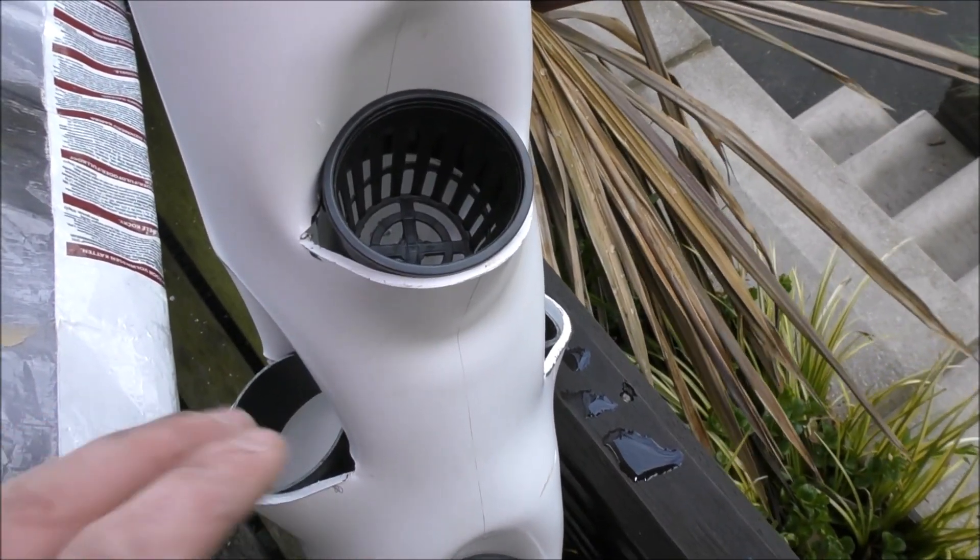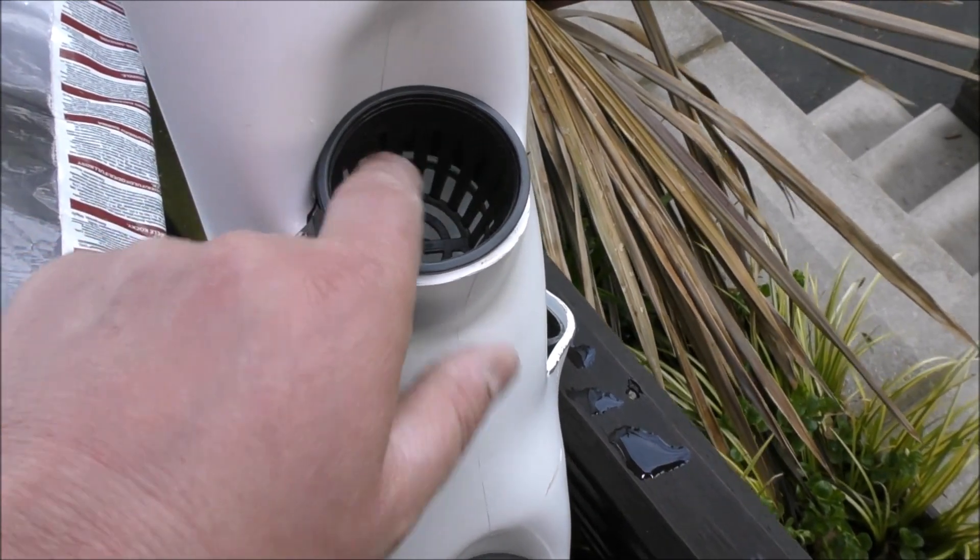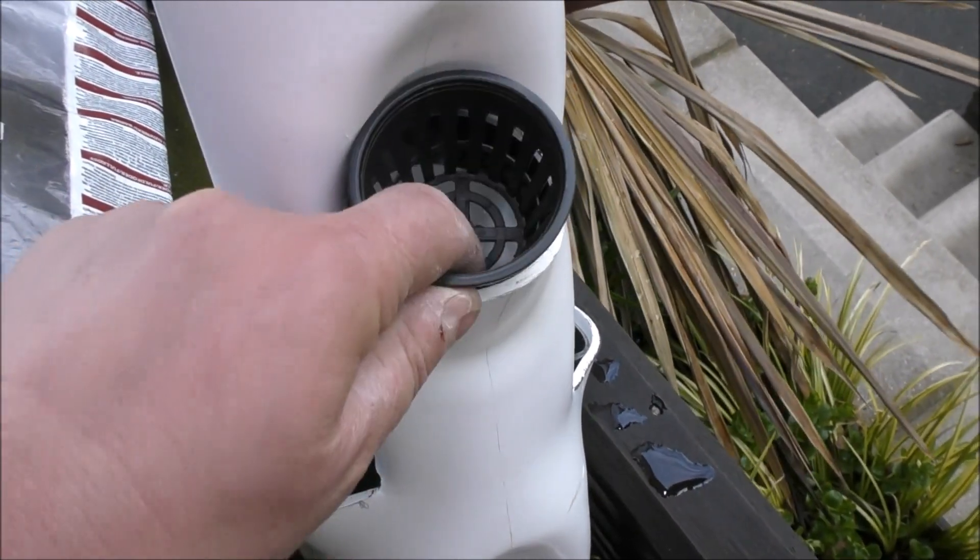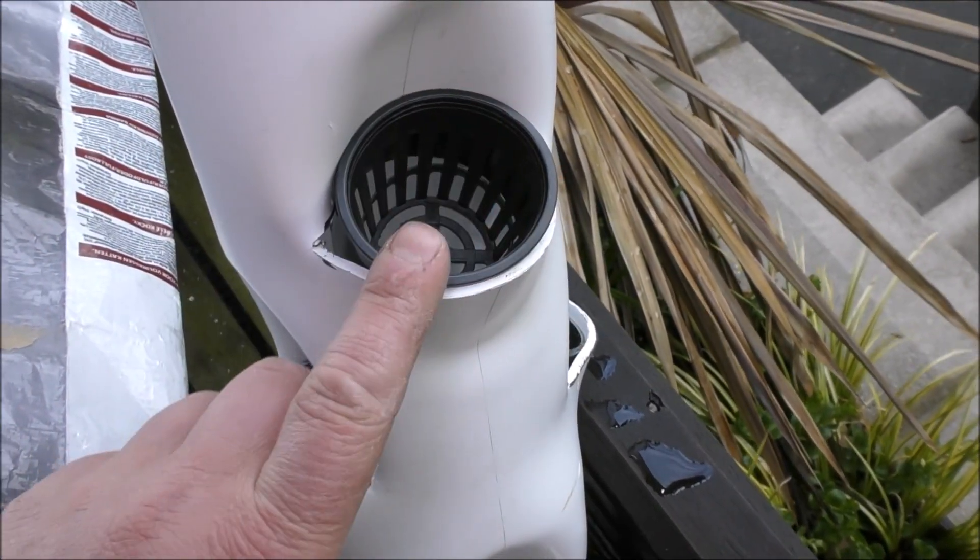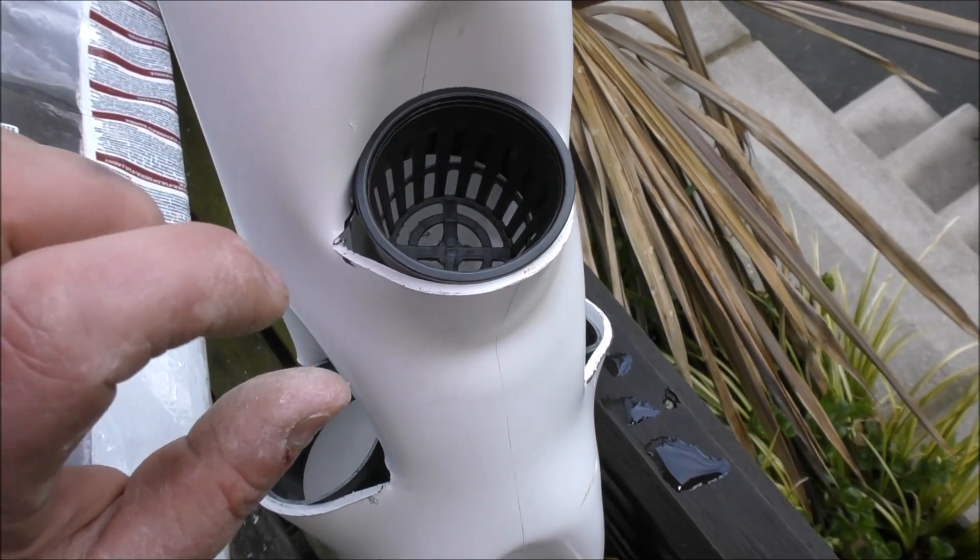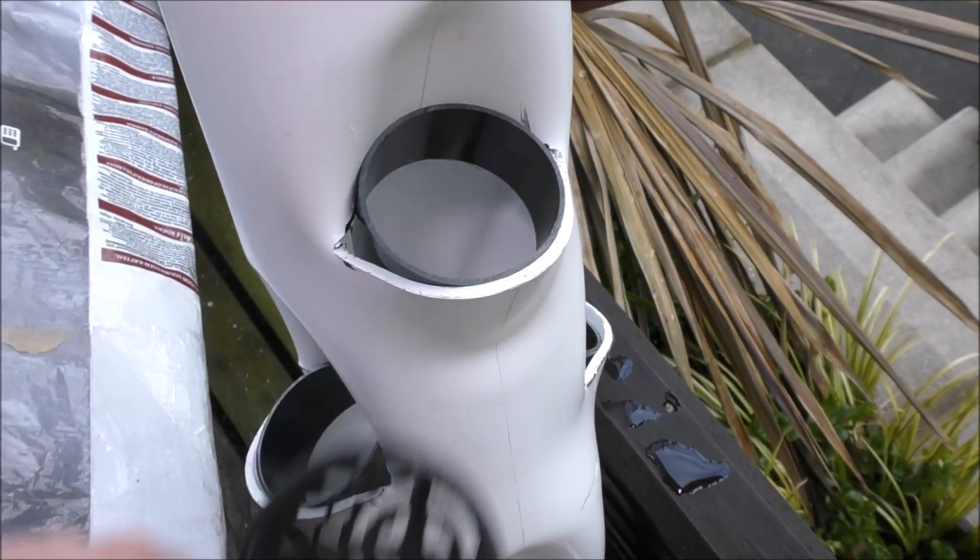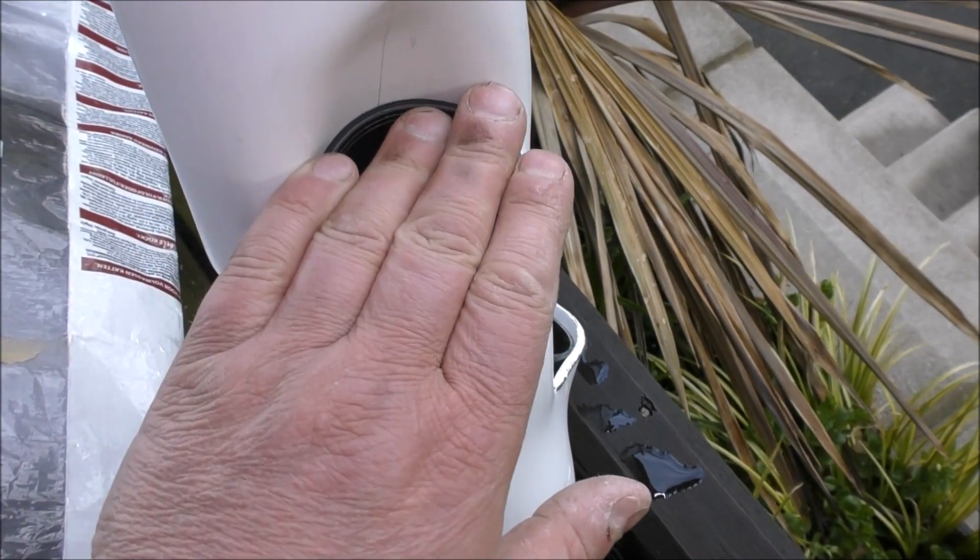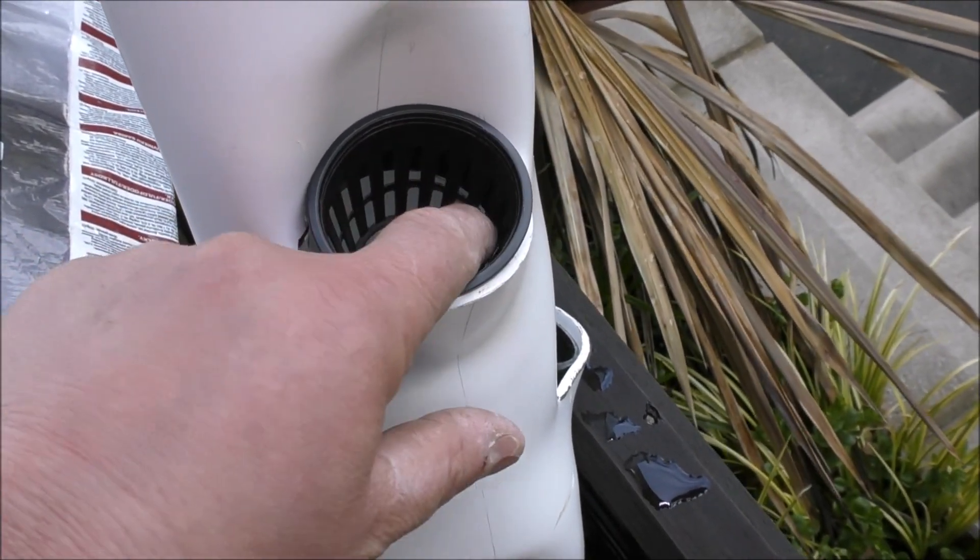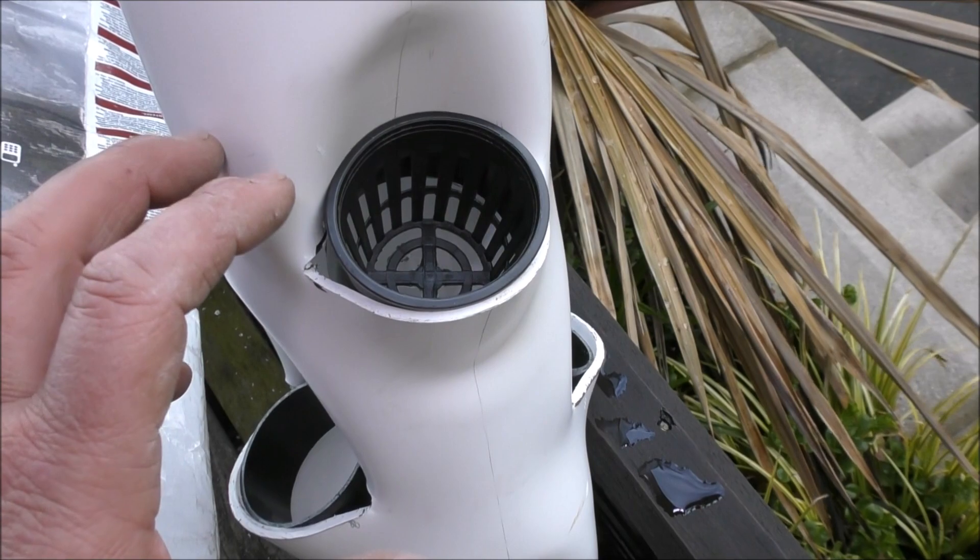That pot fits in there absolutely perfectly. Now you can see all the perforations aren't impeded by the collar. The collar is only about three quarters of an inch deep by two inches diameter. So all the roots are going to be able to come through with these perforations into the water flow.